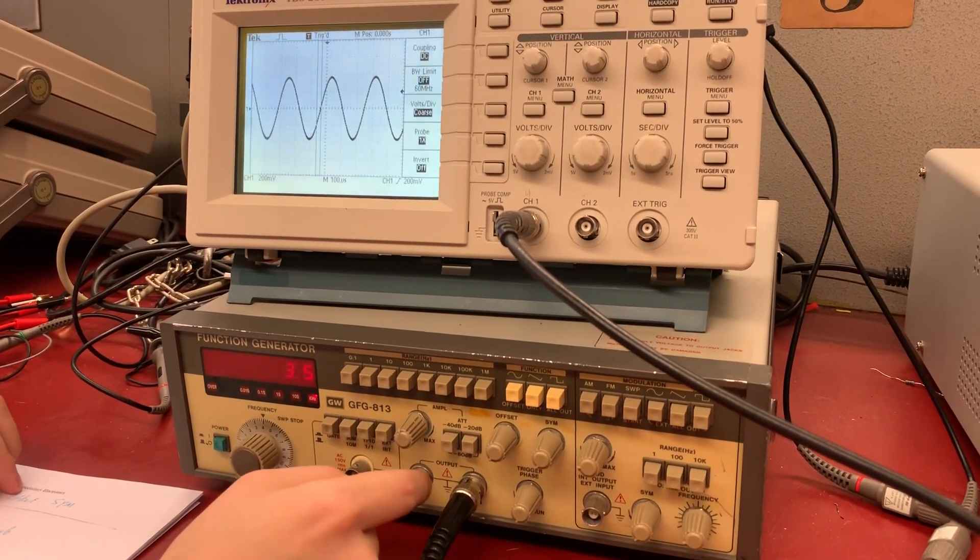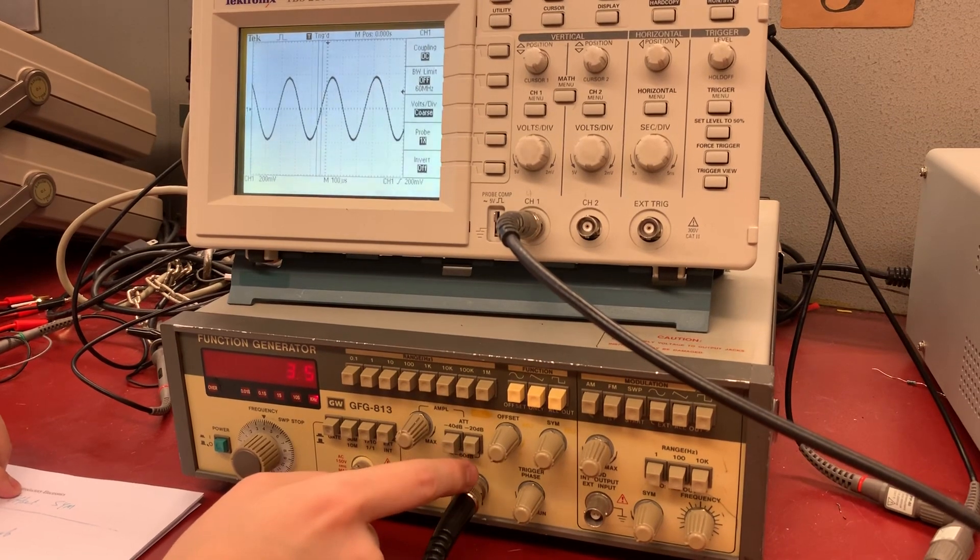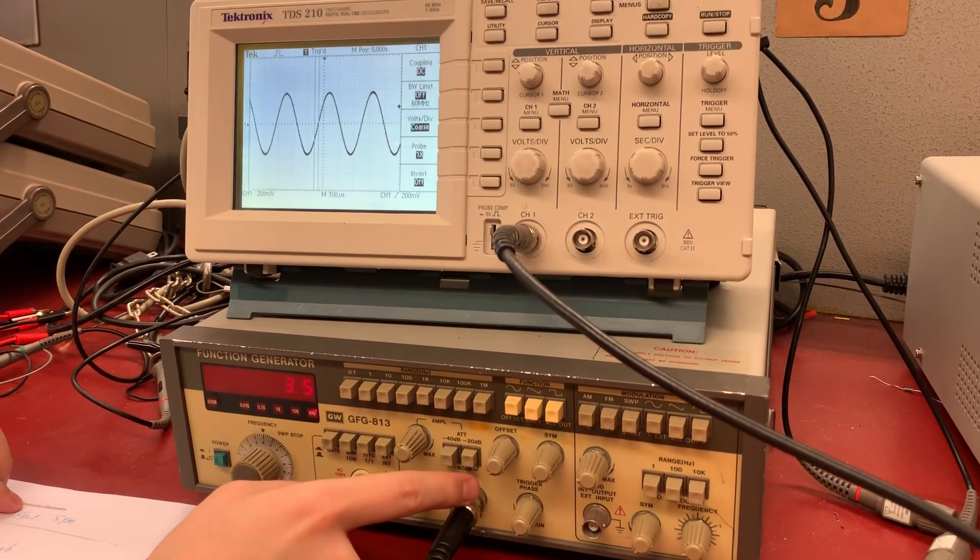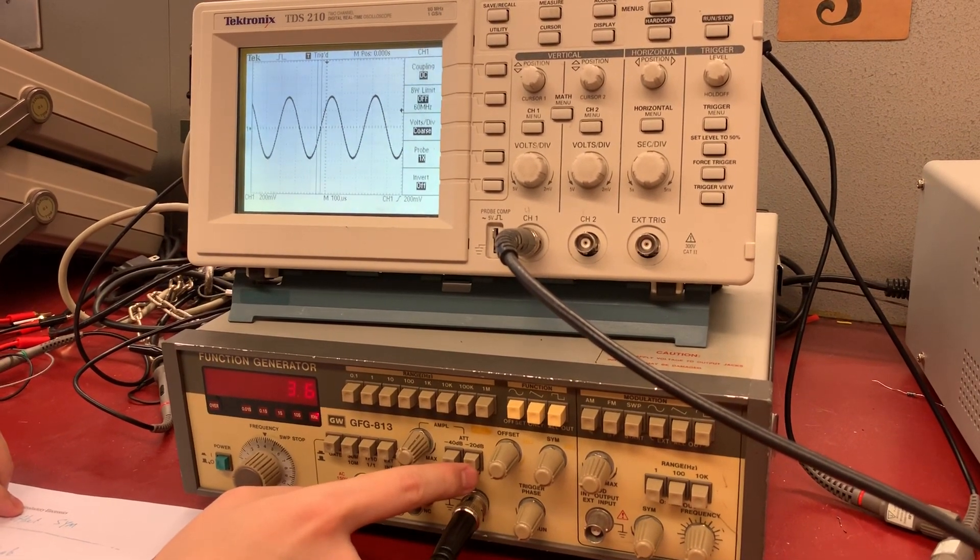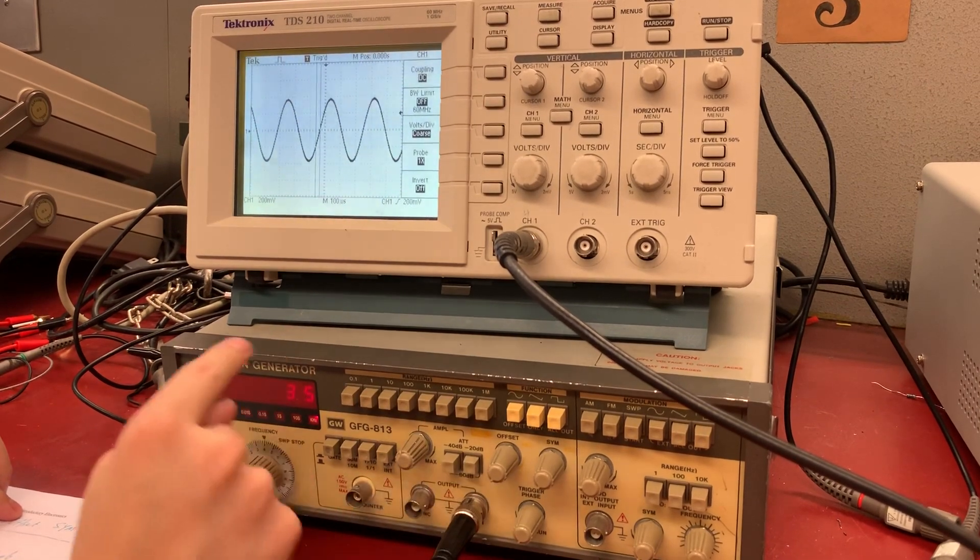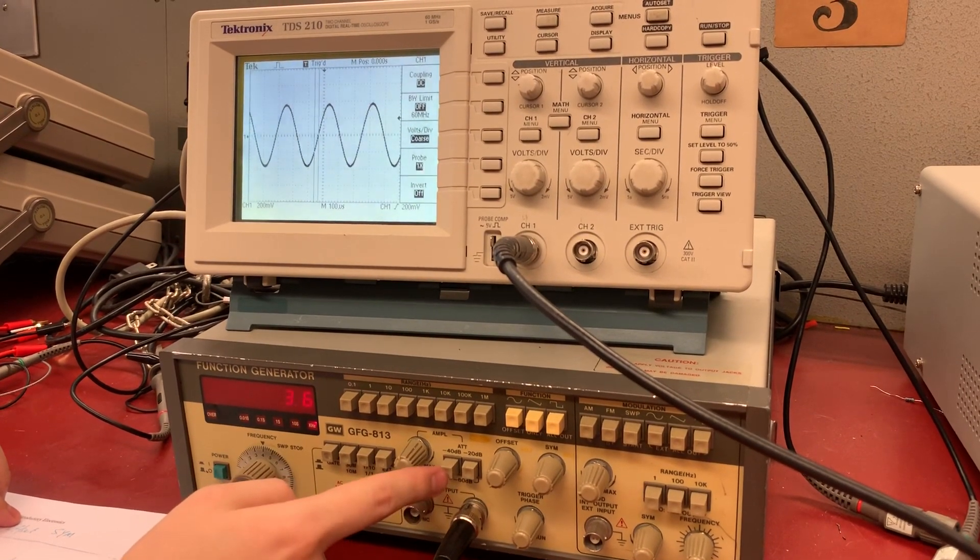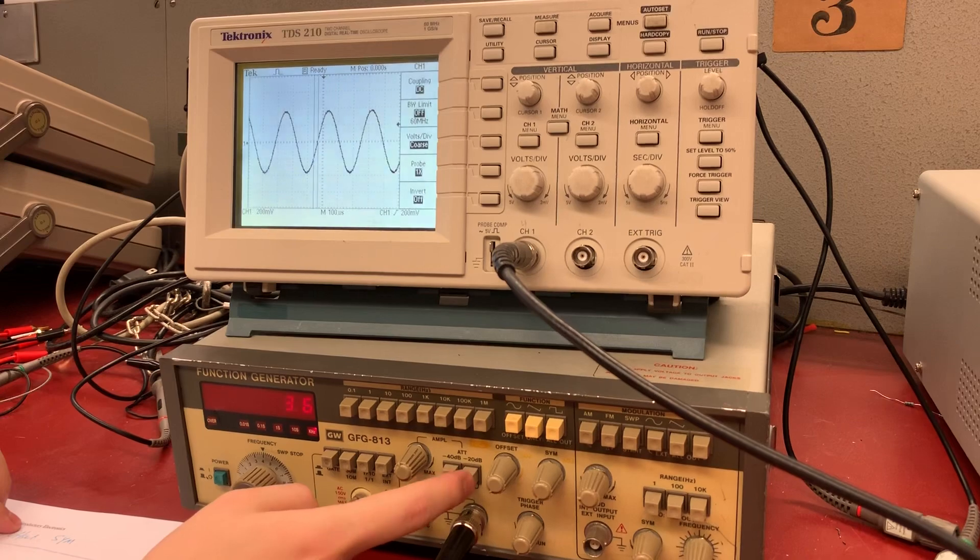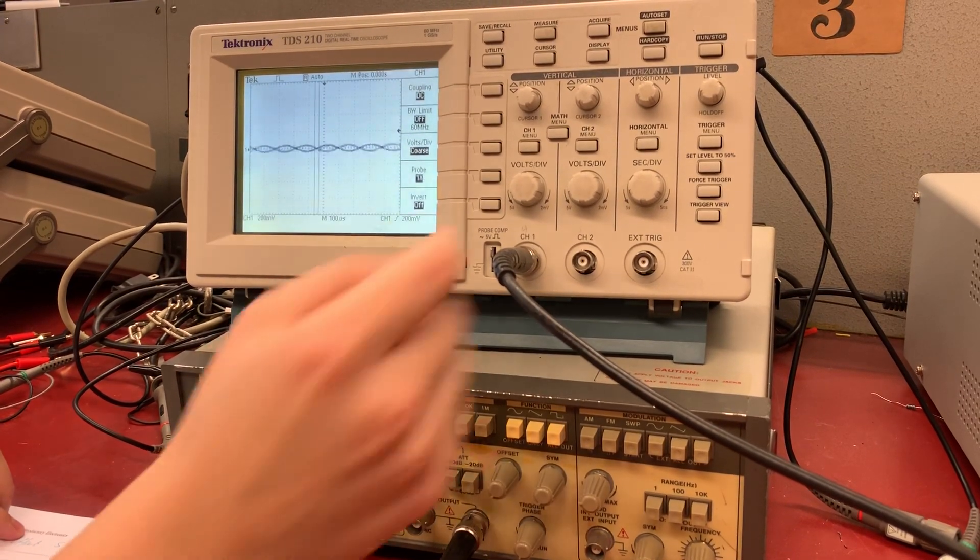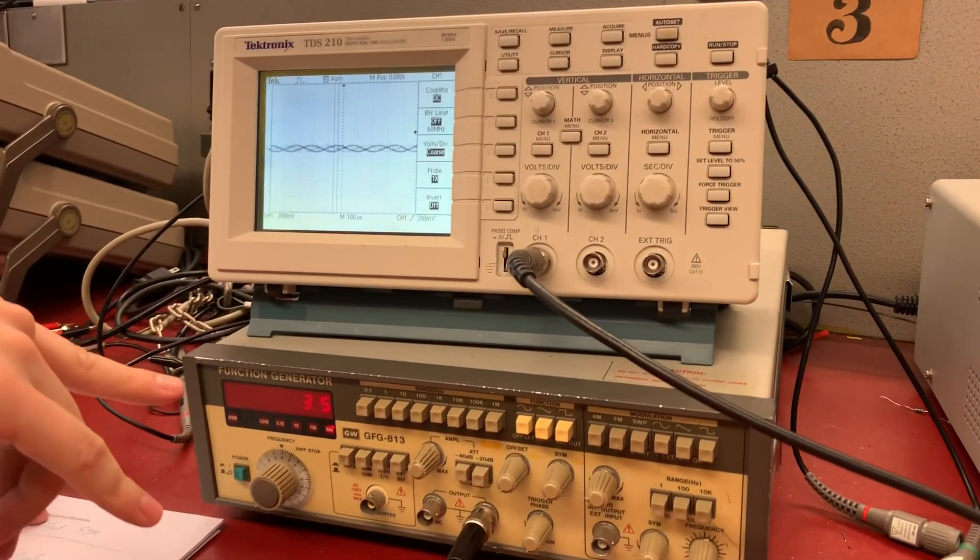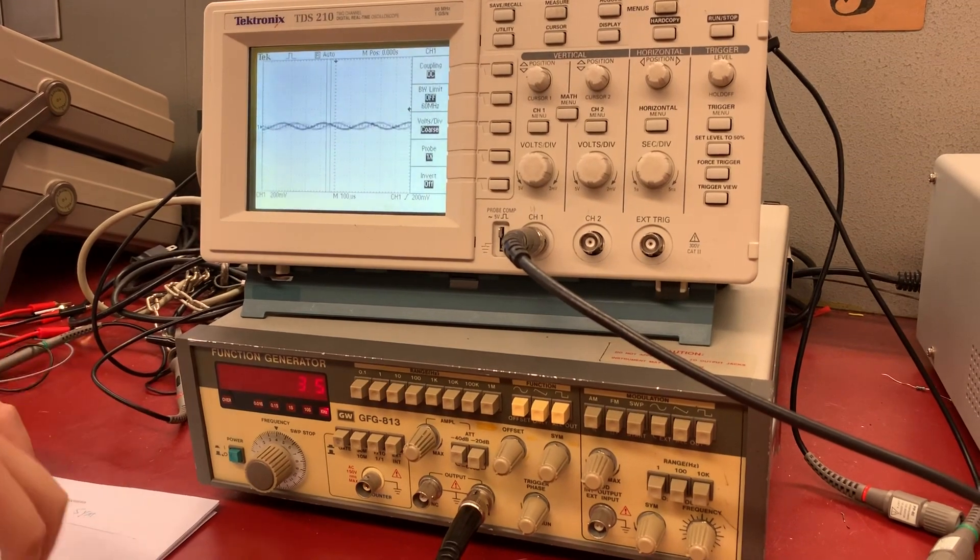Another thing at the bottom is the attenuation. In this mode, we select the attenuation at -20dB, which means 10 times less than the original signal. If we click -40dB, it will be 100 times smaller than the original signal.